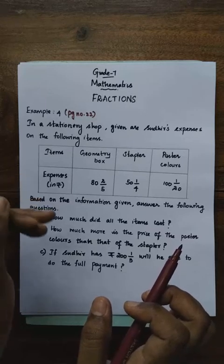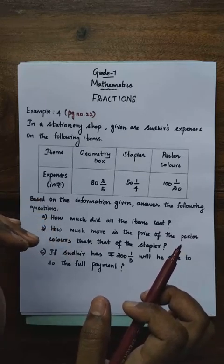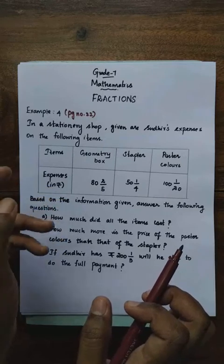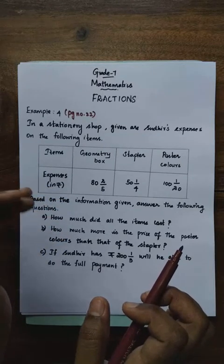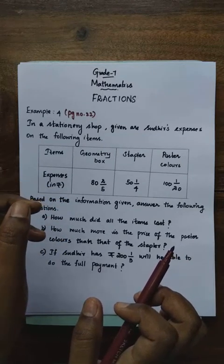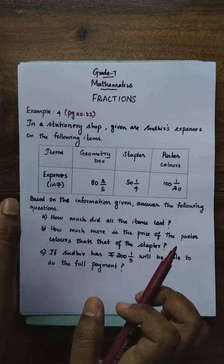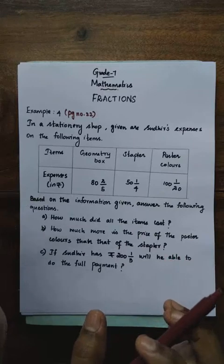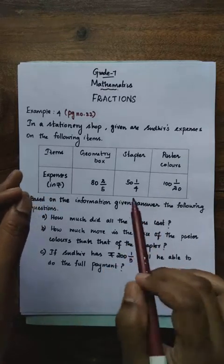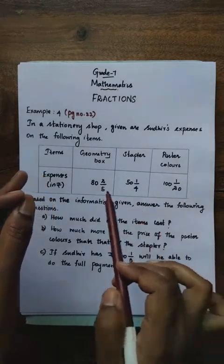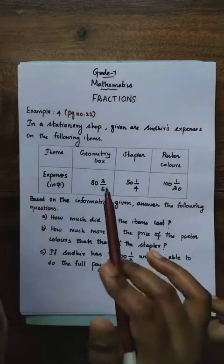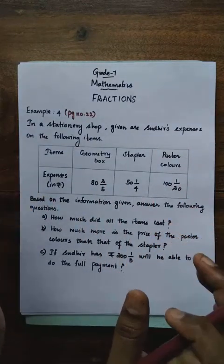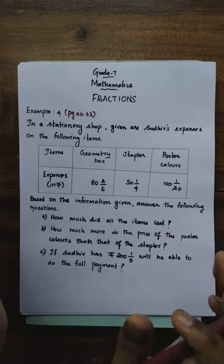We are going to calculate the total cost of all the items. For finding the total cost, what will you do — add or subtract? Yes, add. For finding total cost, we are going to add all the expenses. That is the first question.